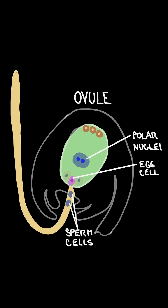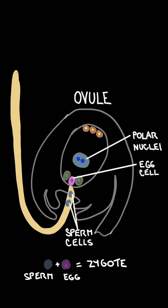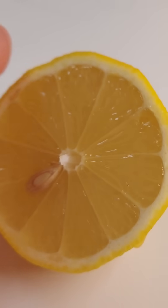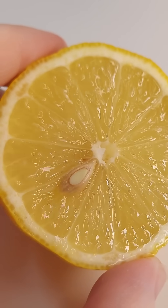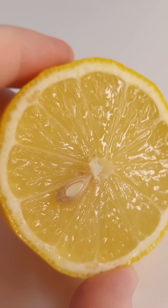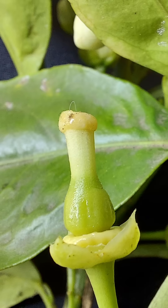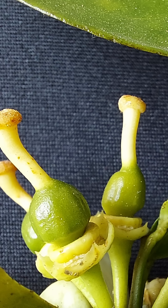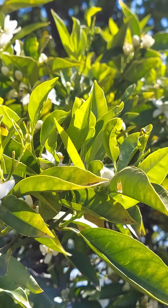Inside the ovule, there is an embryo sac in which there is an egg cell. The male sperm joins with the female egg to form a zygote. The fertilized ovule develops into a seed, and the ovary around it becomes a fruit. You can see this as the ovary enlarges and eventually grows to its full size and ripens into a mature fruit.